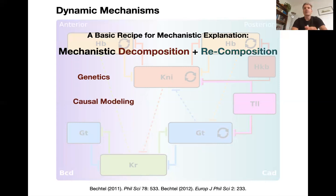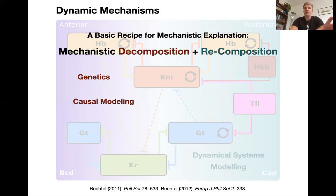A causal graph is a graph of causal interactions — a specific type of network model that tracks causal flow in the real system. This all belongs to decomposition; it doesn't tell us what the orchestrated operation of those different interactions actually does. For that we need dynamical systems modeling, which doesn't necessarily give you mechanistic explanations on its own — it's more like a topological explanation. So we need to bring these two worlds together.